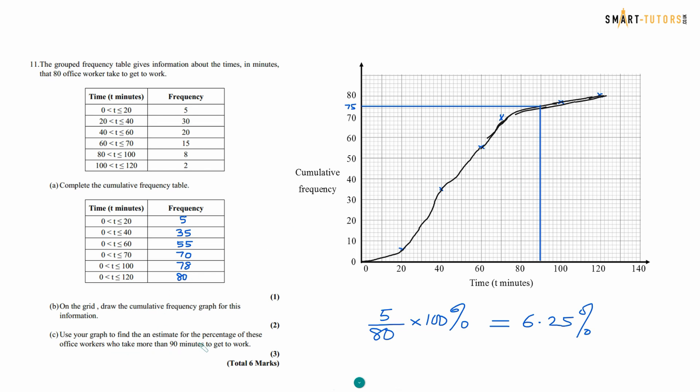Use your graph to estimate the percentage of these workers who take more than 90 minutes to get to work. 90 minutes means you draw a vertical line, 90 minutes comes to 75. So the difference between 80 to 75 is 5. So 5 people took more than 90 minutes. So 5 over 80 times 100, you get the answer 6.25 is the answer.